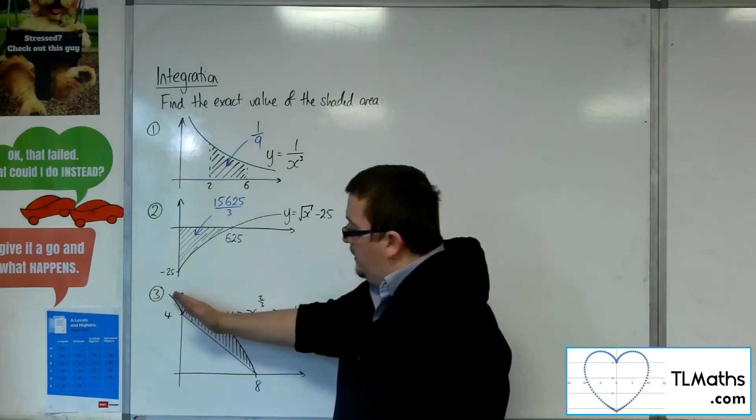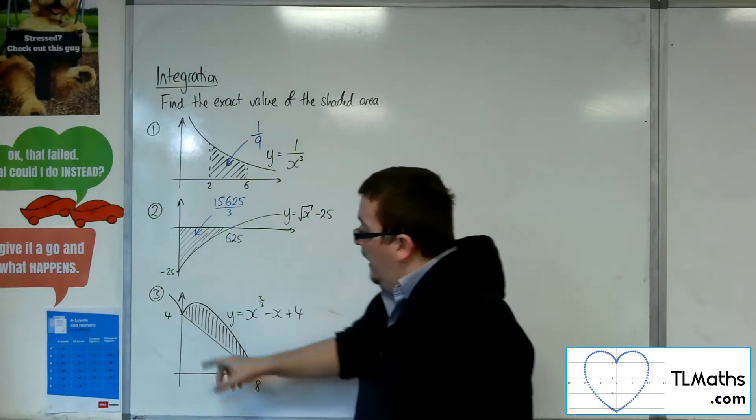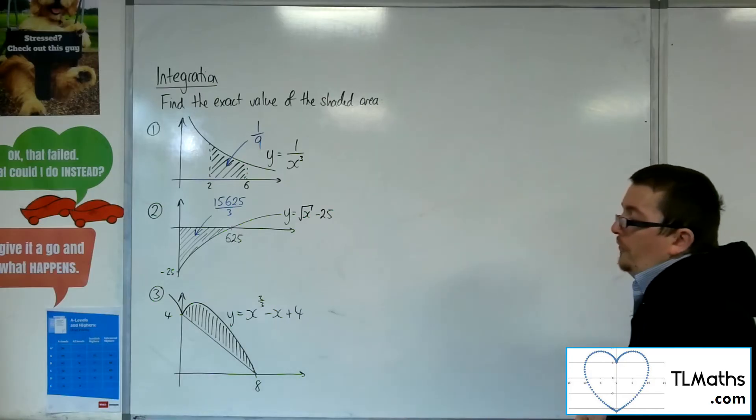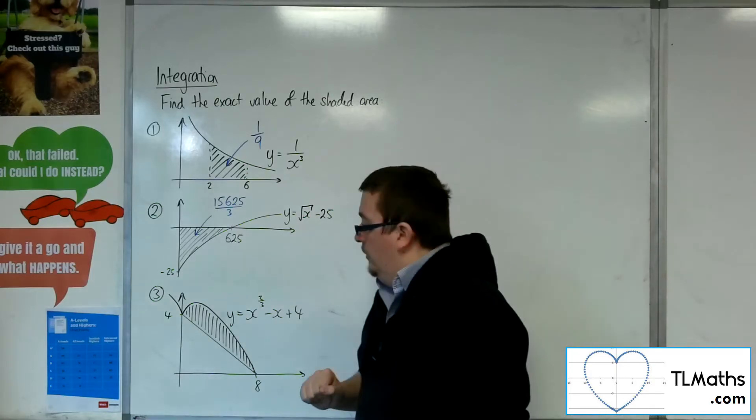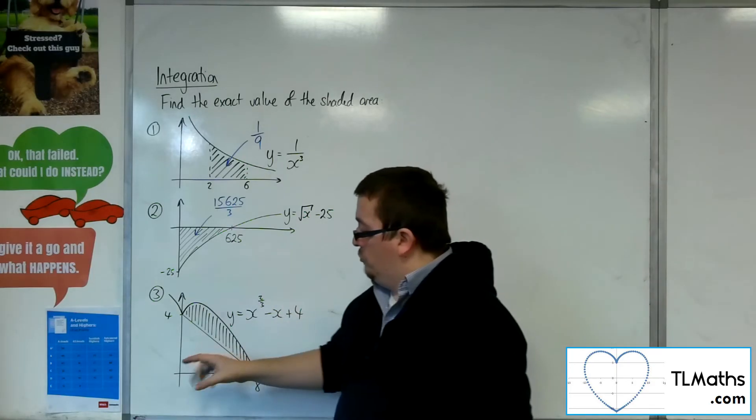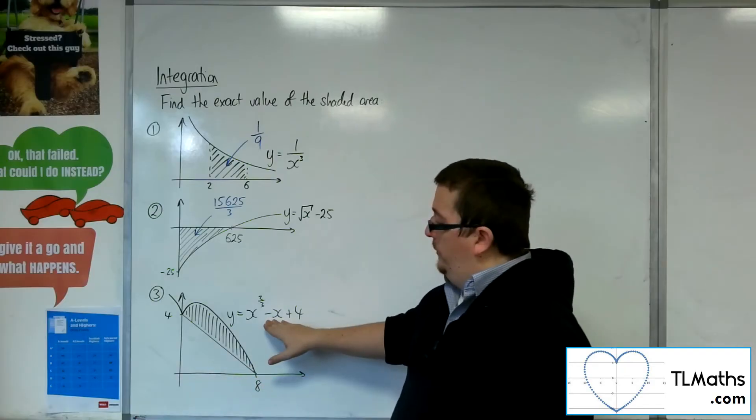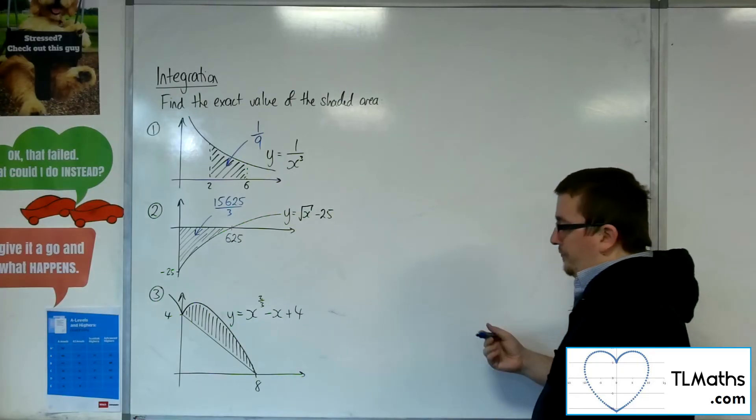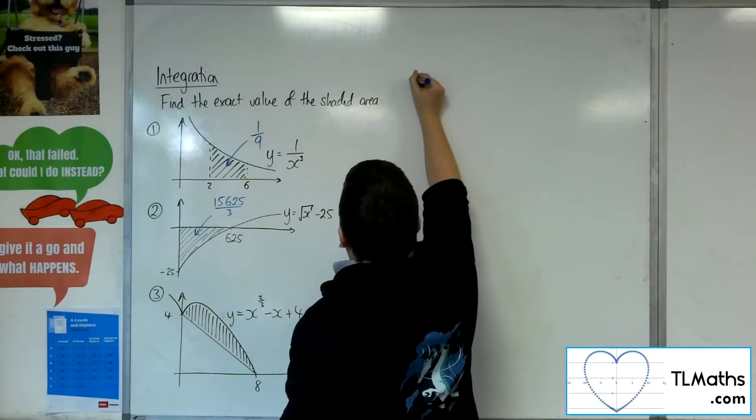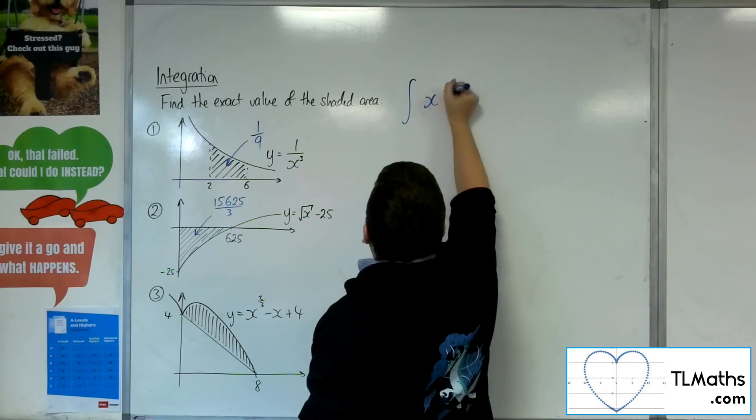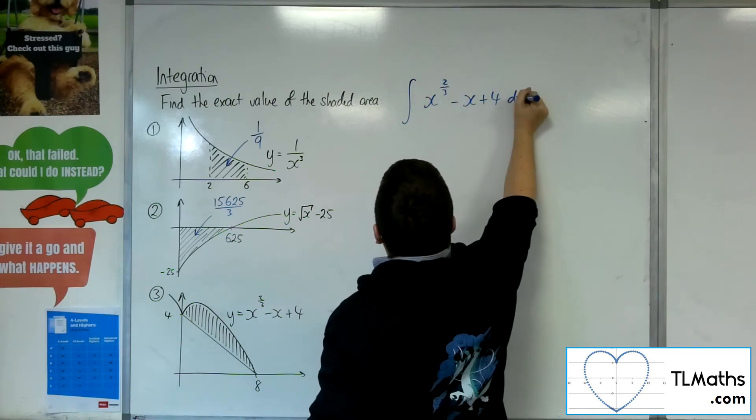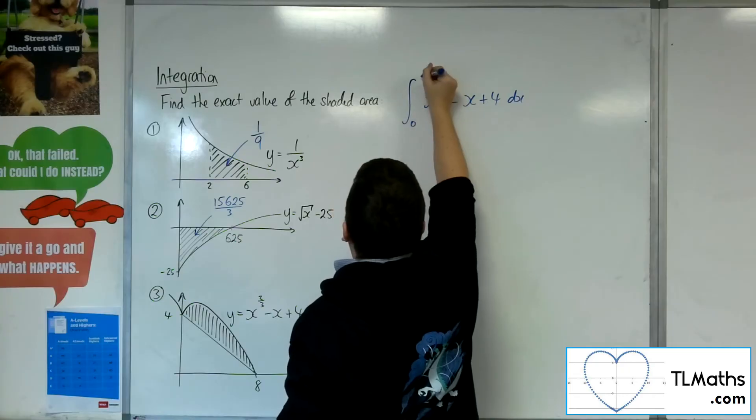And what I've done is I've kind of cut it with this straight line. So I want to find the shaded region. So what I'm going to want to do is find the integral between 0 and 8 of this, and then take away the area of that triangle to leave me with the shaded region. So let's do the integral first. So I'm going to integrate x to the 2 thirds, take x plus 4, and evaluating that between 0 and 8.